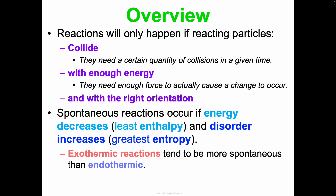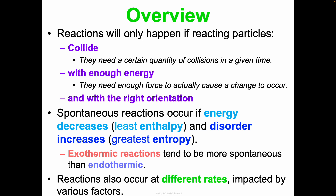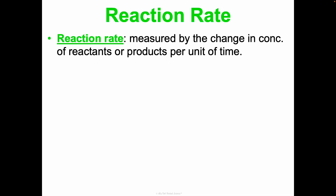But all that to say, regardless of spontaneity, all reactions can occur at different rates, and that is impacted by different factors. Reaction rate is basically how fast a reaction is happening, and we measure it by looking at a change in the concentration of reactants per unit of time, or looking at a change in the concentration of products per unit of time. I'm not going to have you calculate this, but I want you to understand how different factors affect reaction rate.